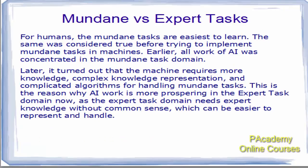For humans, mundane tasks are the easiest to learn, and the same was initially assumed for machines. Earlier, AI work was concentrated on mundane tasks. However, it was found that mundane tasks involved abilities like common sense and logical reasoning, which were more difficult to implement in AI machines. They required complex knowledge representation and complicated algorithms. This is why AI work is now more prospering in the expert task domain, as expert tasks need expert knowledge without common sense, which is easier to represent and handle.